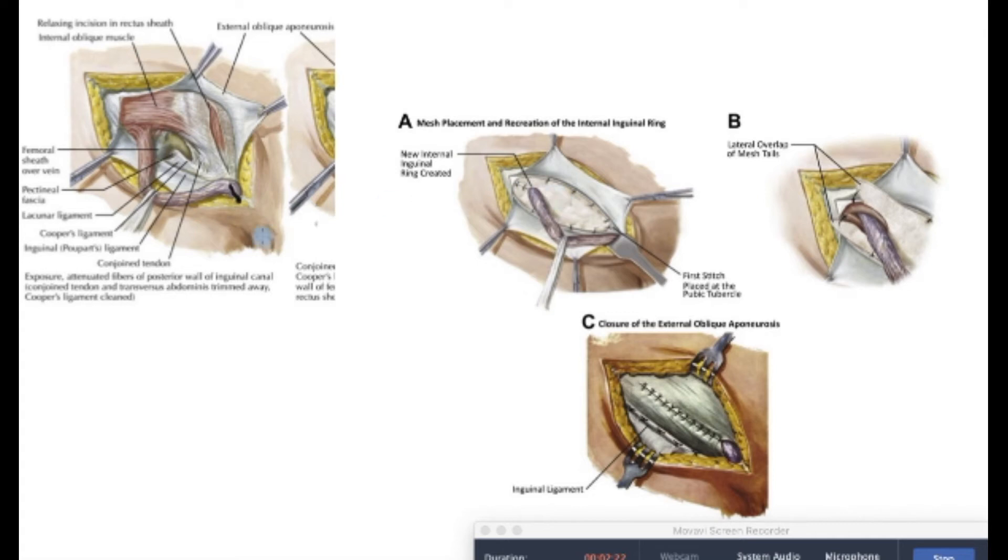Over here you can see the same area, but now a mesh has been placed. So this area over here, this is the mesh which now covers the whole of the area and the defect to give it strength. This just shows how the mesh wraps itself around the spermatic cord, and once the mesh has been put in, the muscle layer shown over here is now closed over.